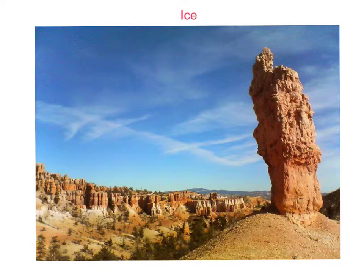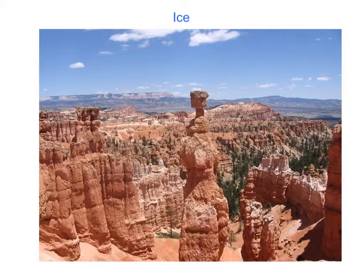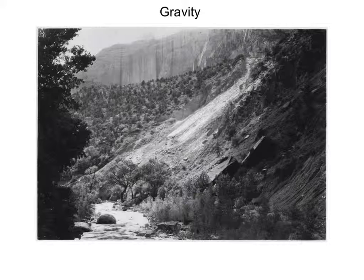Believe it or not, these rocks were once large walls of rocks. What happened was the water got into the little cracks of the rocks and the water froze. When the water froze, the water expanded and chipped off pieces of the rocks. In both of these pictures, there are hoodoos. Hoodoos are the rocks that stayed from the walls of the rocks.